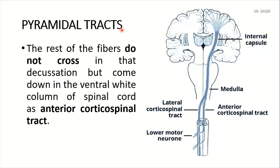The rest of the fibers — the remaining 10% — do not cross at that decussation, but instead come down in the ventral white column of the spinal cord as the anterior corticospinal tract.